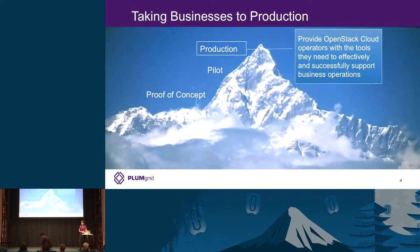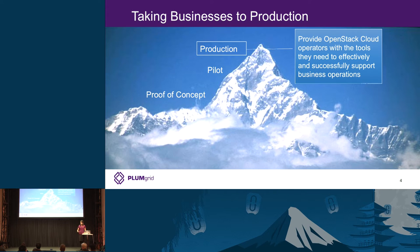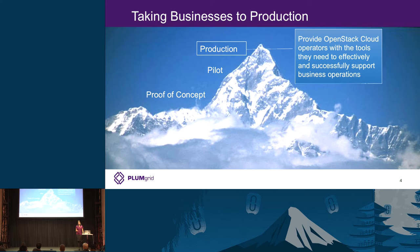We've had this product for a number of years and have witnessed adoption and growth from early lab proof-of-concept environments all the way to large production deployments. When you work with customers daily, you understand that challenges and needs evolve — from the beginning when it's all about exploring the technology and understanding how pieces come together, to actually deploying OpenStack plus the virtual networking layer in production. The key requirement at that stage is all around operations: how do I operate this environment, get visibility into it, and figure out what component is misbehaving if something breaks?